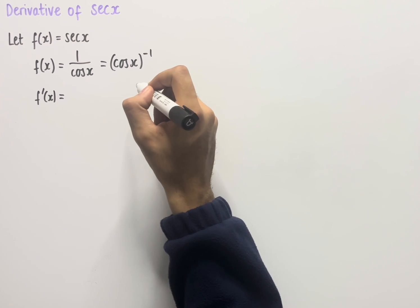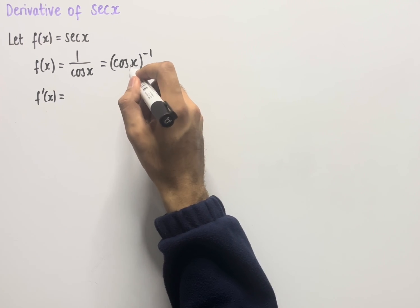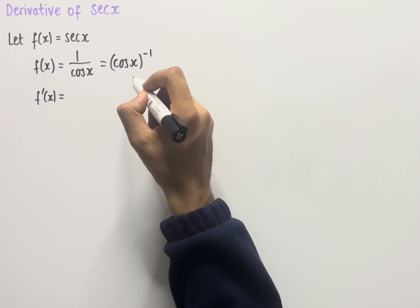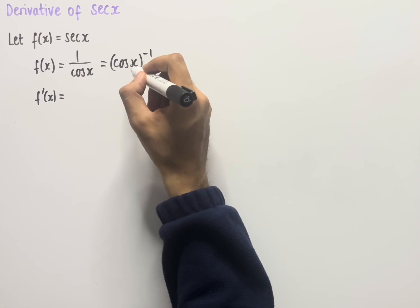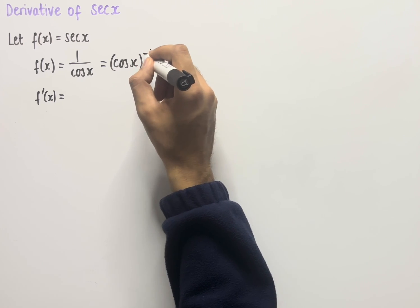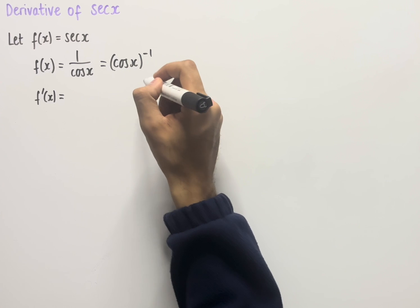The chain rule tells us that when we have a function within another function, we can use this rule to differentiate it. In this case, we have cos x within the function x to the power of minus 1, so differentiating this gives us the following.